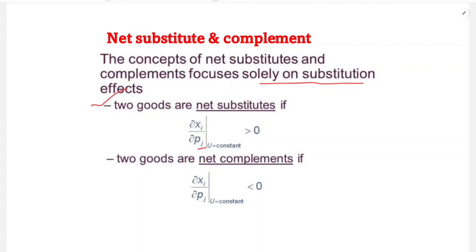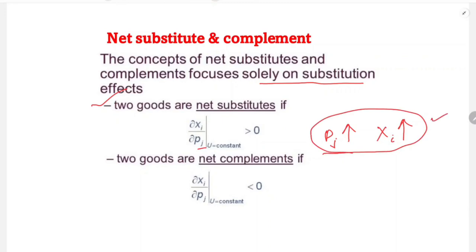The two goods are net substitutes if the partial derivative of xi with respect to pj, with utility held constant, is greater than zero — a positive relationship. This means when the price of good j increases, the demand for good i increases. For example, if the price of coffee increases, the demand for tea increases — so they are net substitutes.